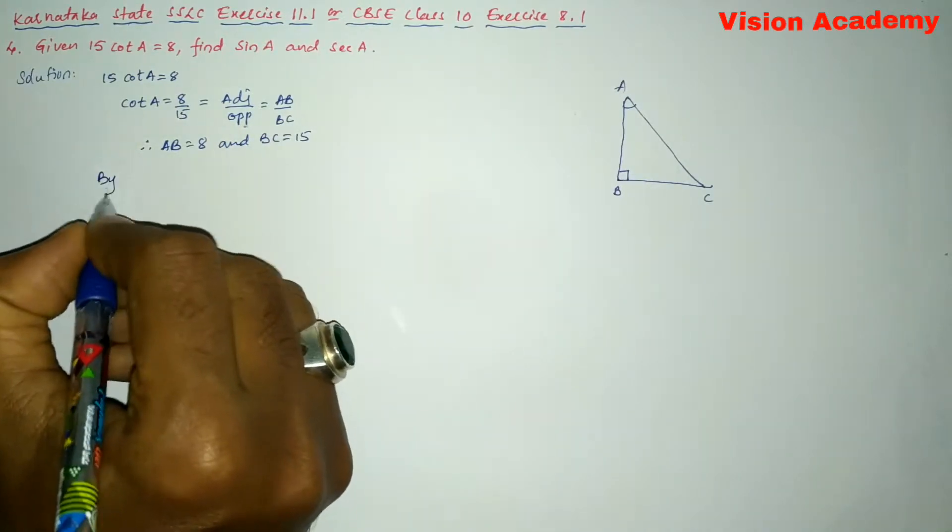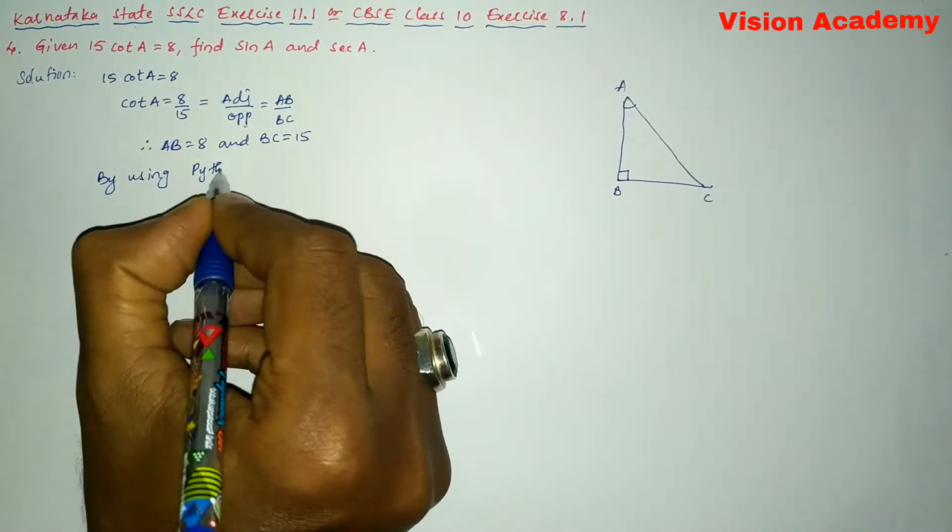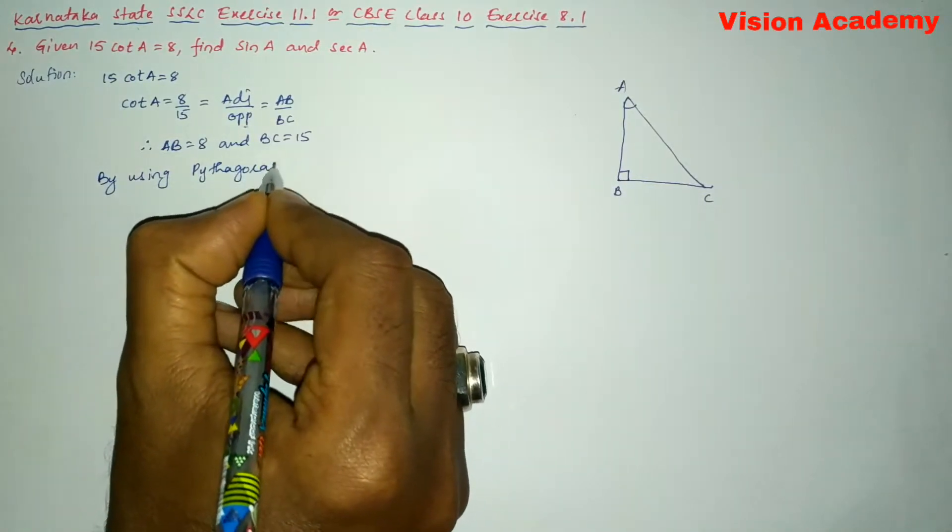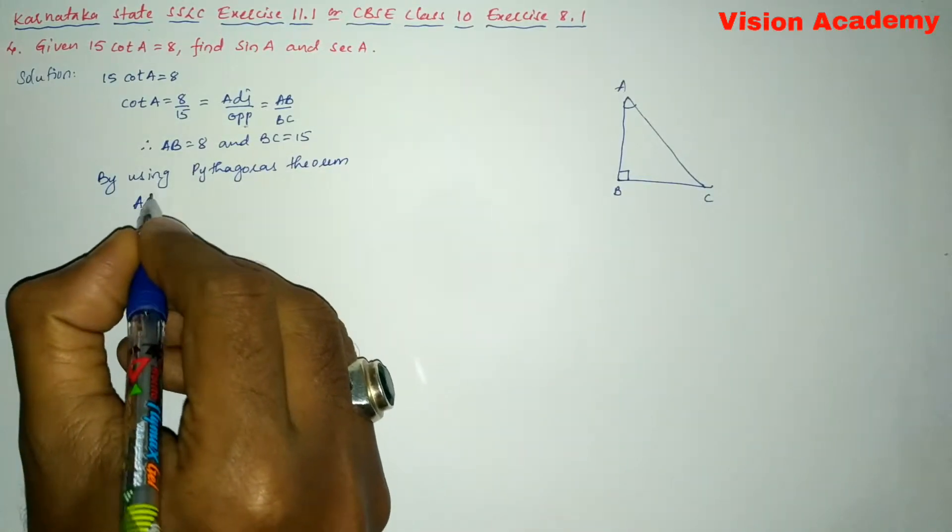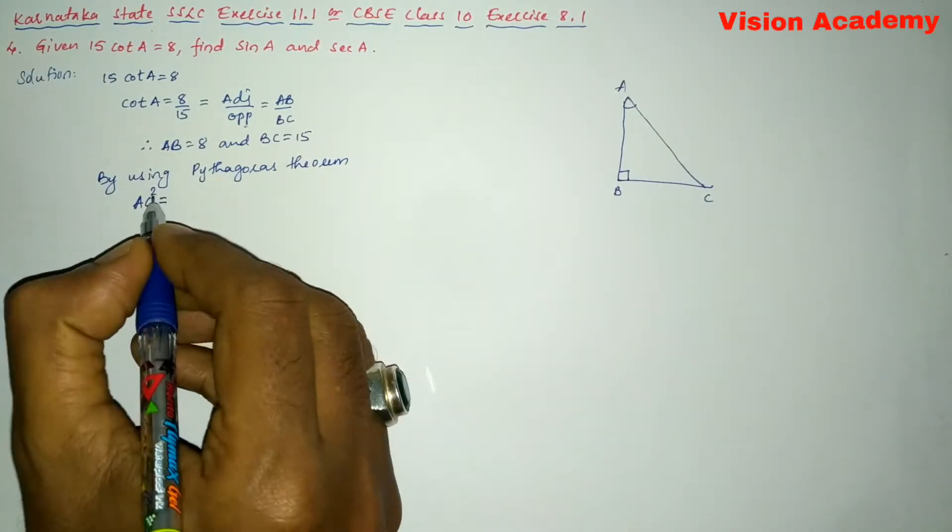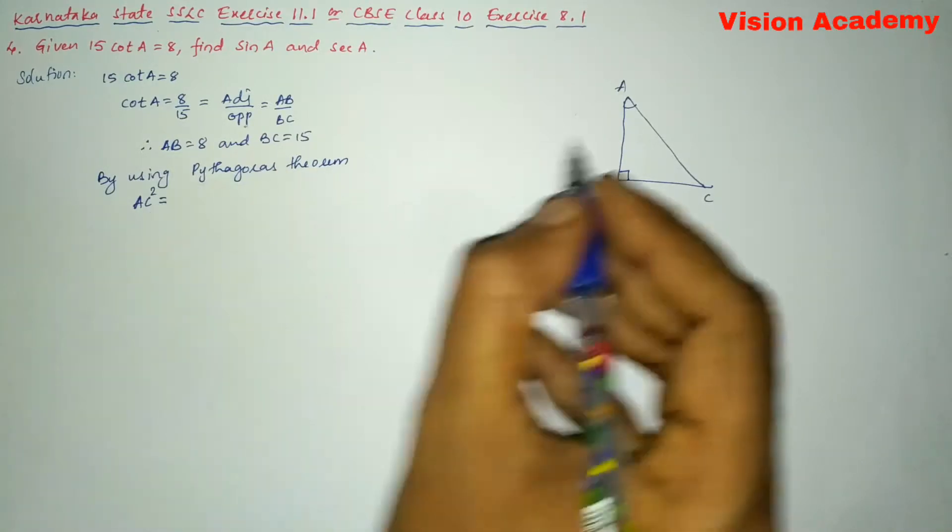Now, by using Pythagoras theorem, we can write: hypotenuse square is equal to sum of the squares of other two sides of the right-angled triangle.